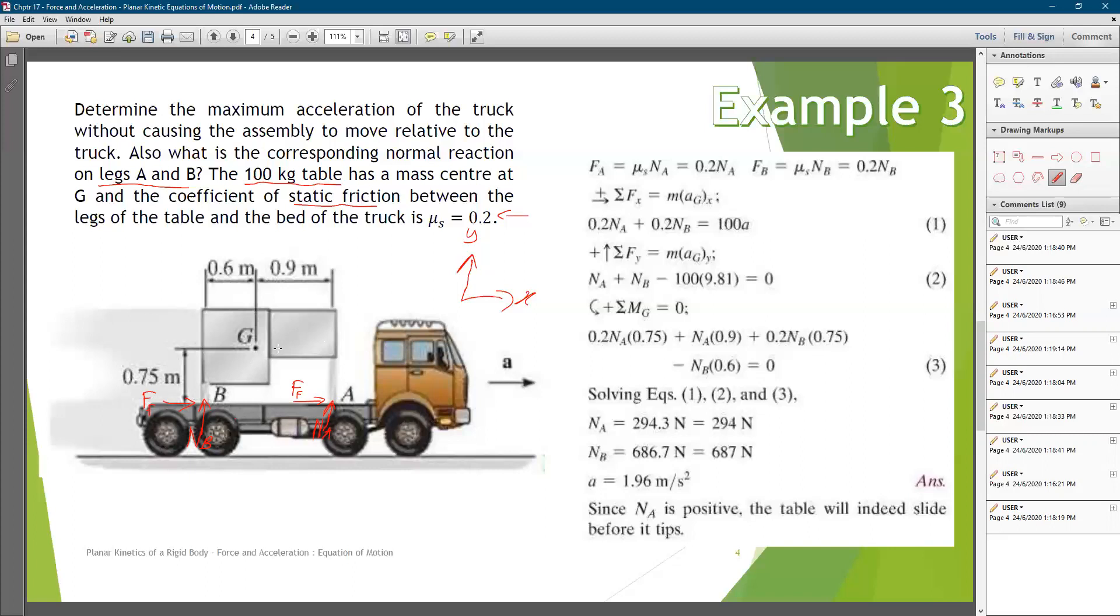We look into the x direction. What we have in the x direction, we only have friction force at point B and friction force at point A. Both are in the positive x direction, like so.